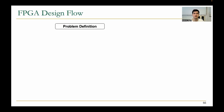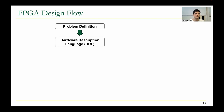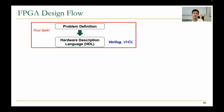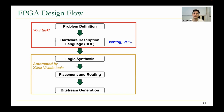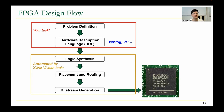This is the design flow of programming an FPGA. You start from a problem definition, then express your solution using a hardware description language such as Verilog or VHDL — we will use Verilog in this course. This is your task in the labs. Then comes logic synthesis, placement and routing, and bitstream generation, which are automated by AMD Xilinx's Vivado tools. Finally, you download this bitstream programming file onto your FPGA to implement your circuit.